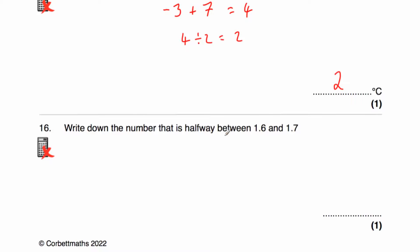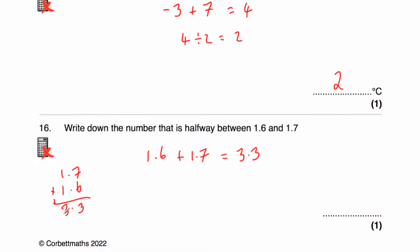Question sixteen says: work out the number that's halfway between 1.6 and 1.7. I can see the answer quickly — it's going to be 1.65. Let's check: 1.6 plus 1.7. Lining them up: 7 plus 6 is 13, put our 3 down carry 1; 1 plus 1 plus 1 is 3. So we get 3.3. Now 3.3 divided by 2 using the bus shelter method: 2 into 3 goes once remainder 1; 2 into 13 goes 6 times remainder 1; 2 into 10 goes 5 times. So the answer is 1.65.